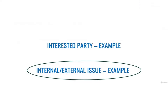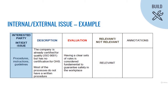Now let's see our second example — an internal issue: Procedures, Instructions, and Guidelines. In the first column, we have the title: Procedures, Instructions, Guidelines. For the description, in our Cheese Factory example, the company is already quality certified but not yet OHS certified. There are some procedures, but not for everything. So we write: the company is already certified for quality (ISO 9001) but has no certification for OHS, and most processes do not have a written procedure. In the Evaluation column, we write that having a clear set of rules is considered fundamental to guarantee safety in the workplace. In the Relevant/Not Relevant column, we write that they are considered a key element to improve OHS — therefore, they are relevant.